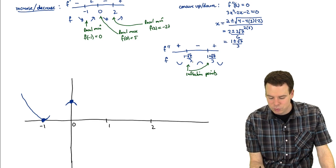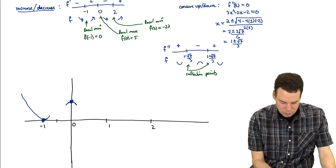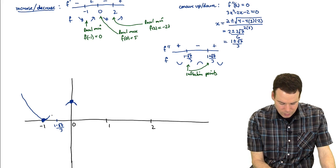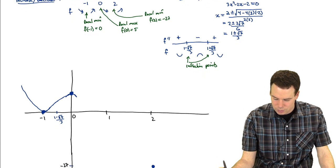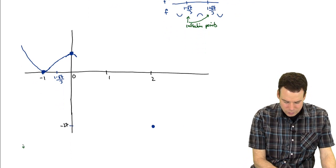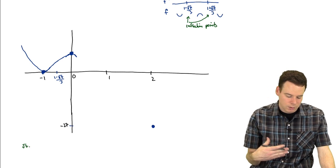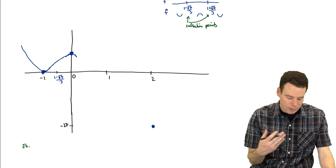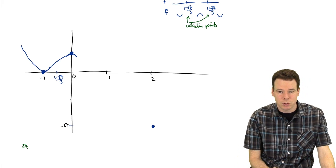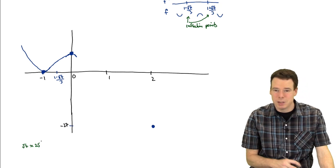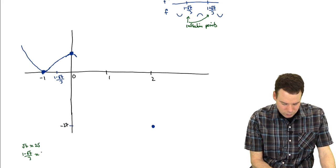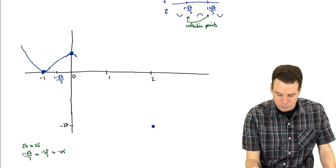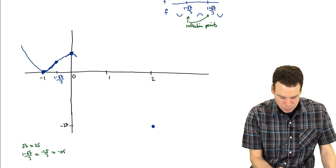The switch happens at the first inflection point, (1-√7)/3. To estimate this, note that √7 is between 2 and 3, maybe about 2.5. So (1-√7)/3 ≈ (1-2.5)/3 = -1.5/3 ≈ -0.5. So it goes from concave up, switches to concave down around here.